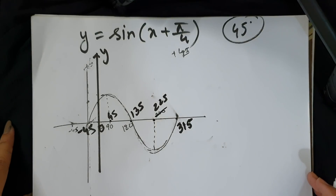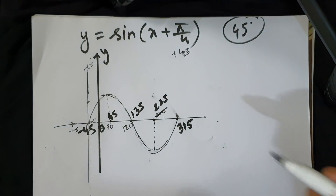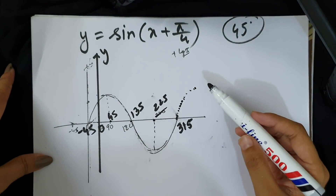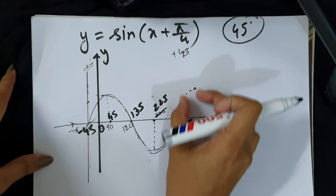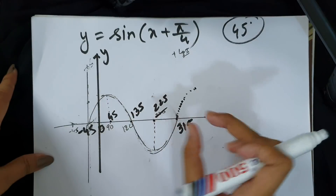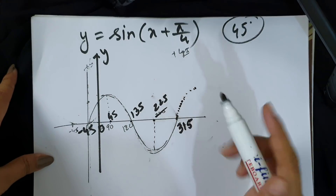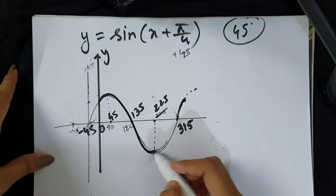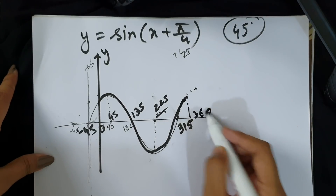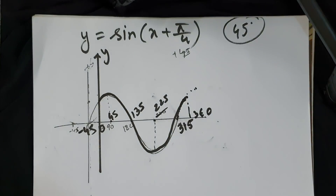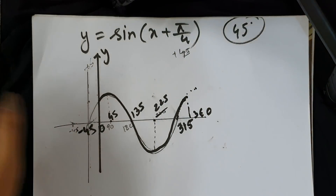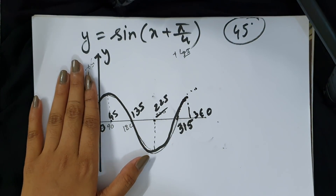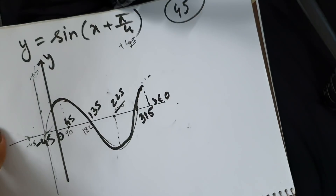You can draw the graph from 0 to 360, then extend to the maximum. Maximum means 90 on the graph, shifted by 45. The final graph shows the maximum point and the complete left-shifted cosine-type graph. The graph shifts left confirming the left shift rule.